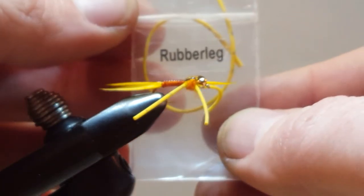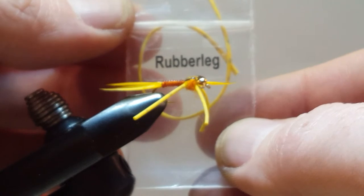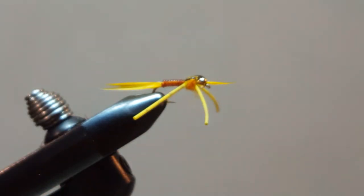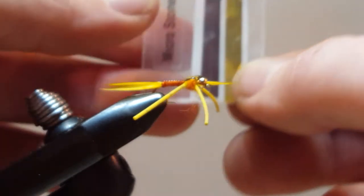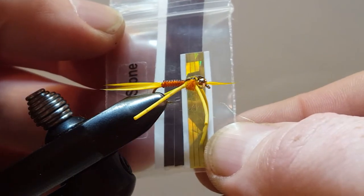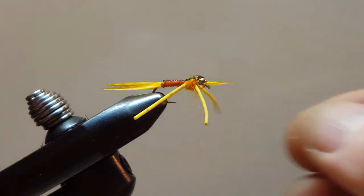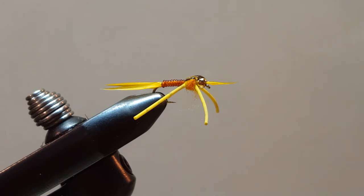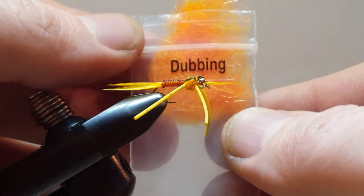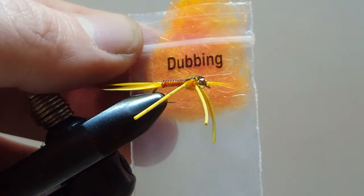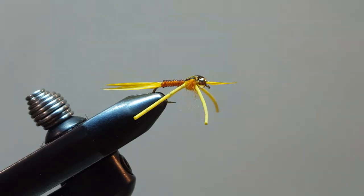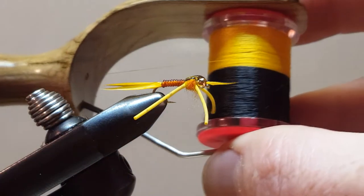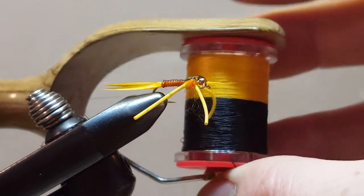Rubber legs, yellow. Wing casing, I'm going to use the brown and gold. And the dubbing is the hot orange. And paired up with it all is a black and yellow tying thread. I will be using the yellow.